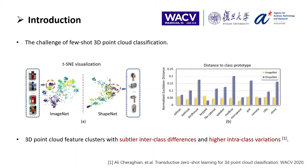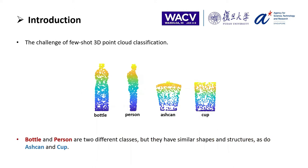Unlike few-shot learning in the 2D domain, 3D few-shot learning is more challenging in terms of irregular structures, subtle interclass differences, and high interclass variances. Because the point-based module trained on low data may generate poor quality feature clusters, as shown in Fig A and B. In this case, Bottle and Person are two different classes but they have similar shapes and structures, as do Ashcan and Karp. So it is hard for the network to recognize them well.